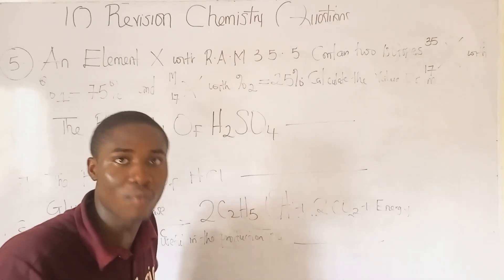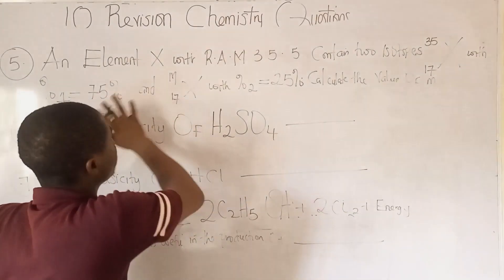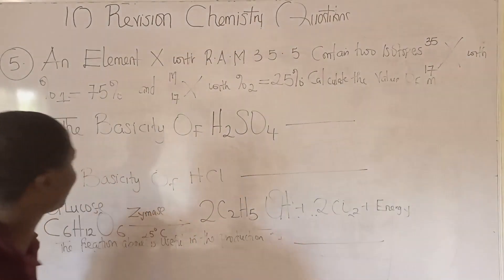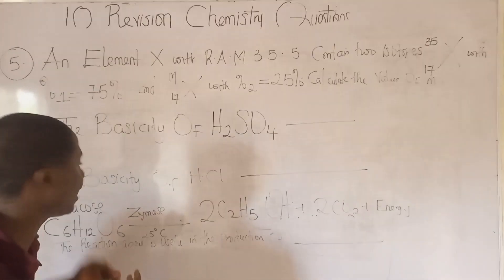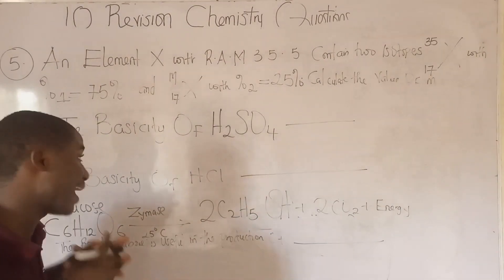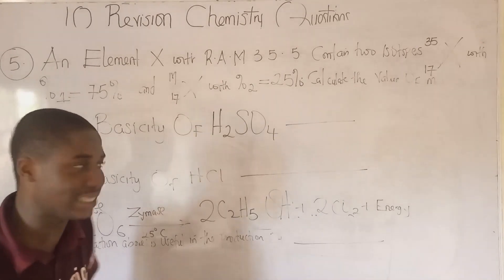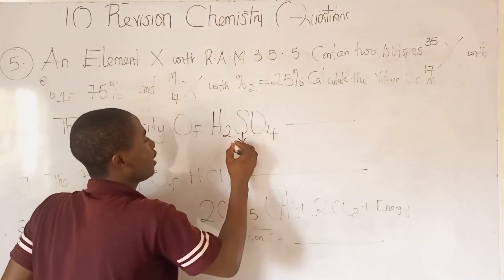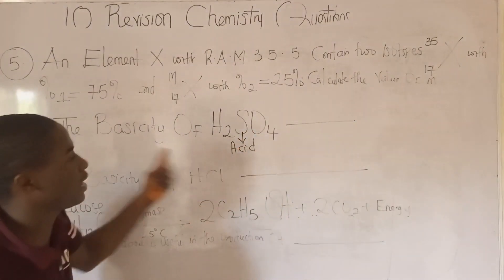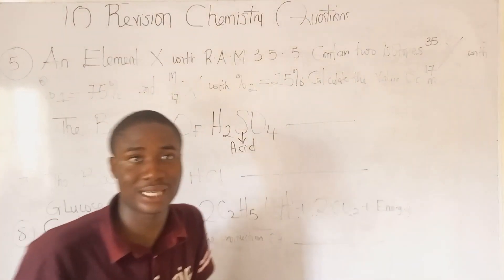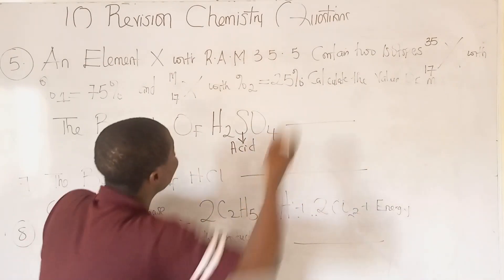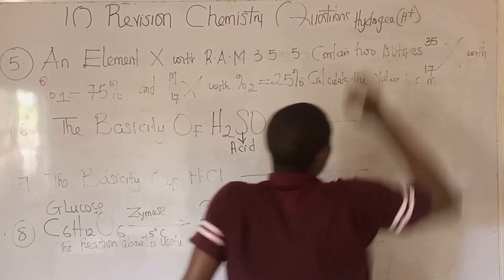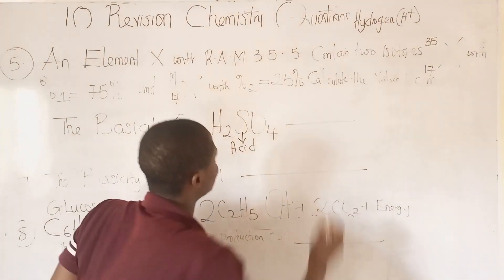Moving to question number 6. You will solve question number 5 and provide the answer in the comment section below. Question number 6 talks about the basicity of an acid — specifically H₂SO₄. Remember H₂SO₄ is an acid. Basicity of an acid is the number of replaceable hydrogen ions, symbolized as H⁺, in one molecule of an acid.